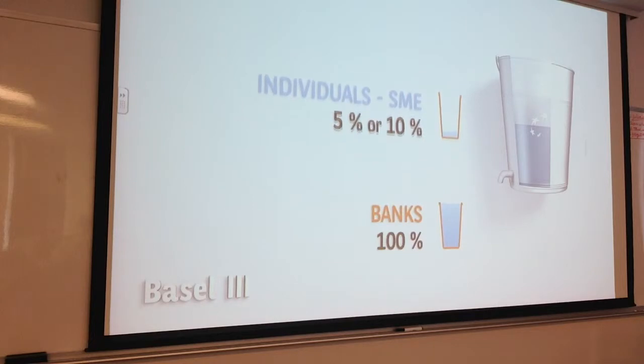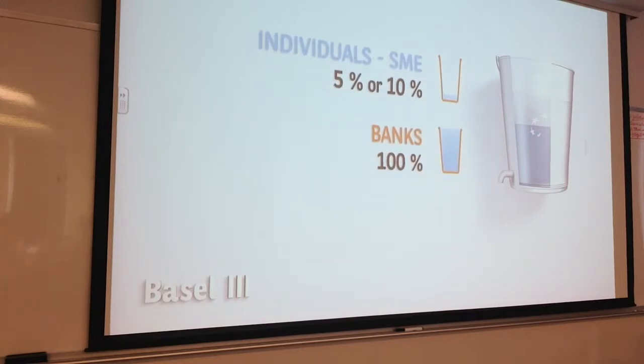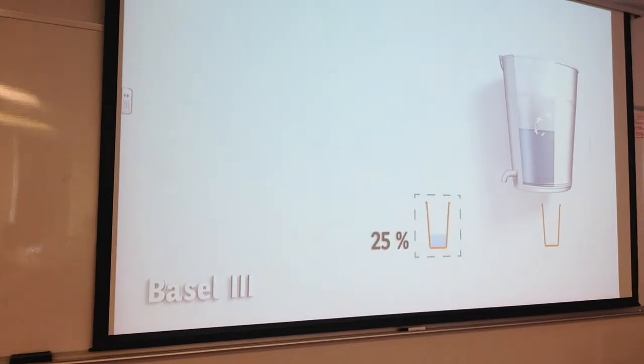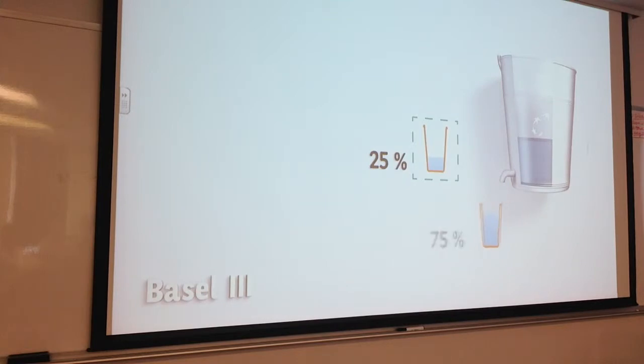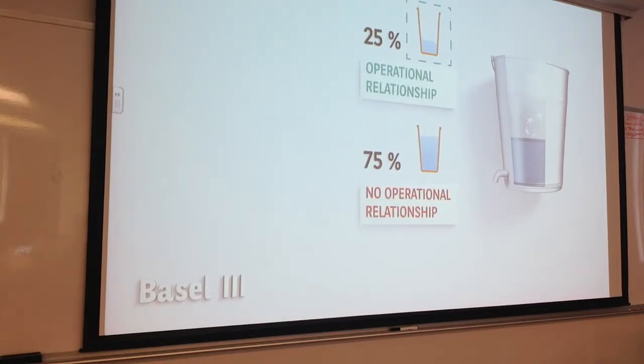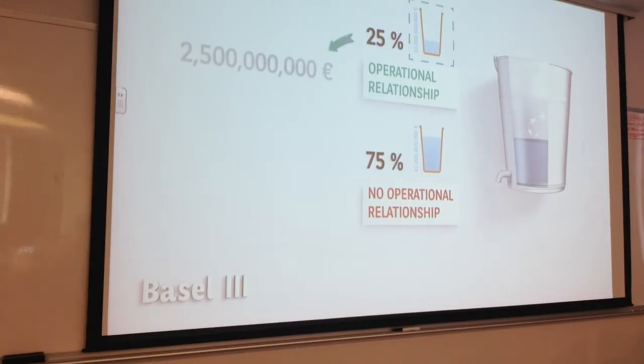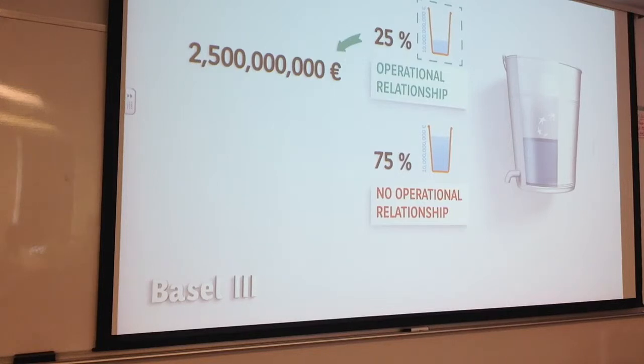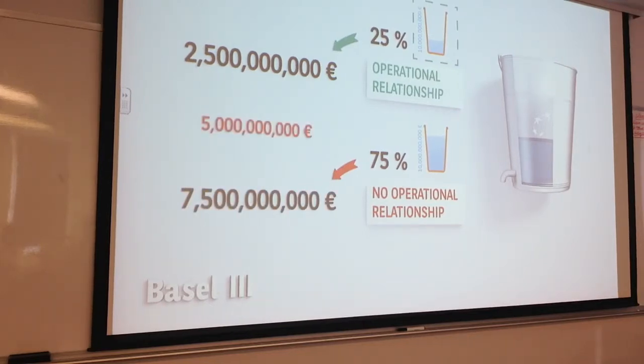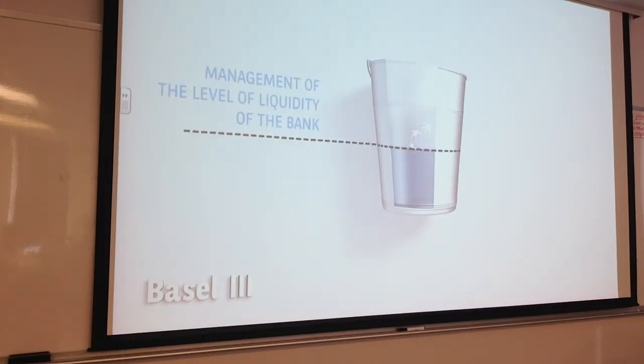For deposits received from banks, the run-off percentage is at 100%, meaning they will leave completely before the end of the stress test. A third category exists relating to deposits from corporates. Here a very important notion is introduced by Basel III. 25% or 75% of the deposits of corporates will leave, depending on the existence or non-existence of an operational relationship between the bank and the corporate.